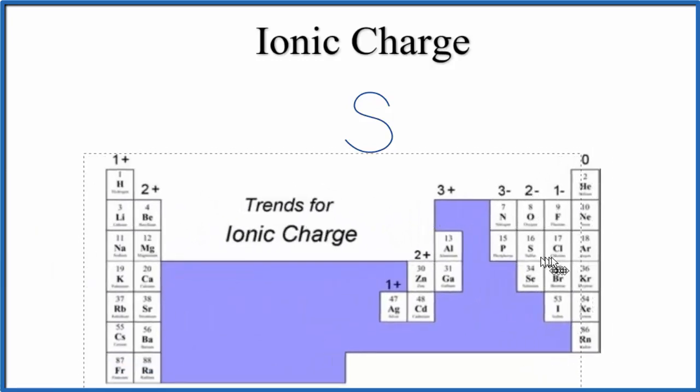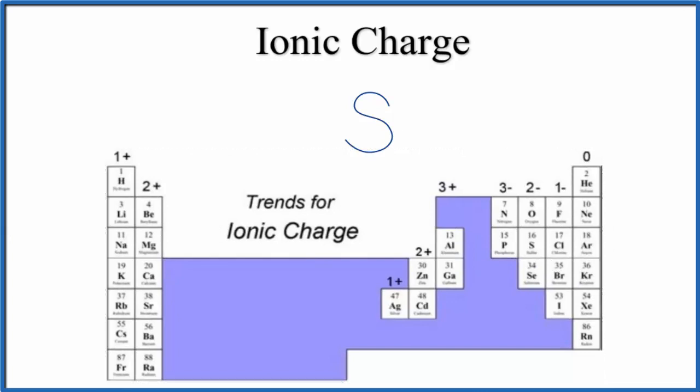If we look at the periodic table, we can see that there's some pretty general trends for ionic charge. Group 1, all of these are 1+. Group 2, 2+. We skip the transition metals and some of these here, and then over here, group 16,